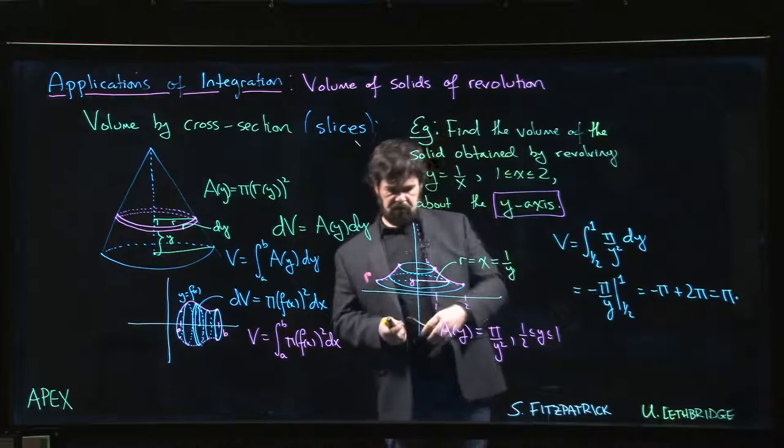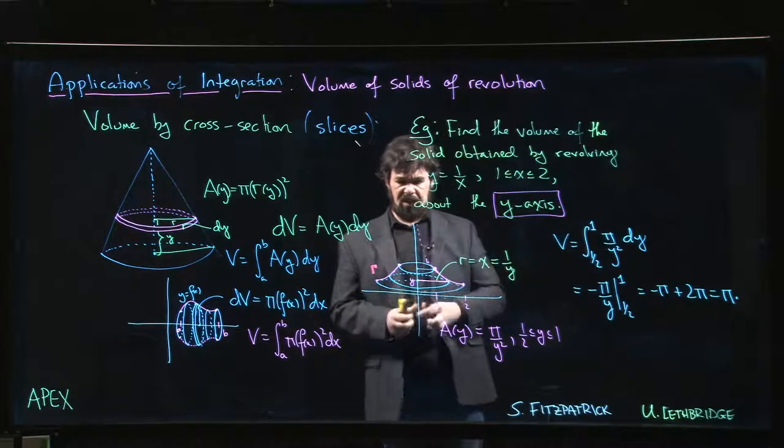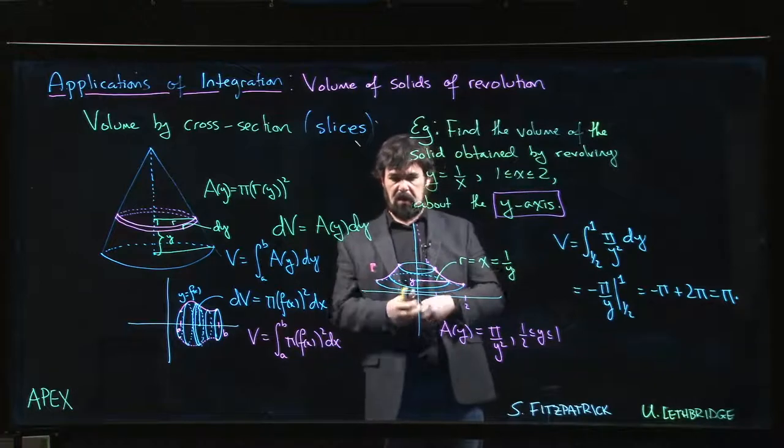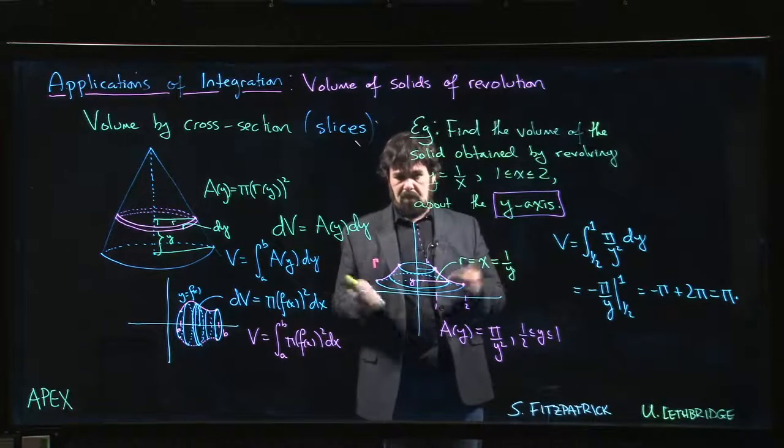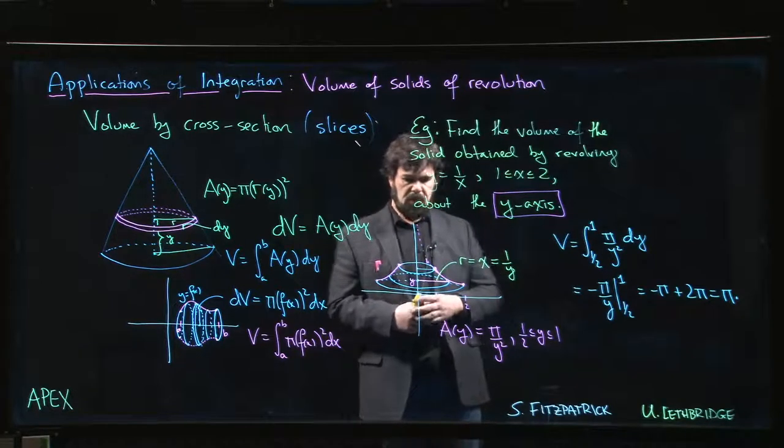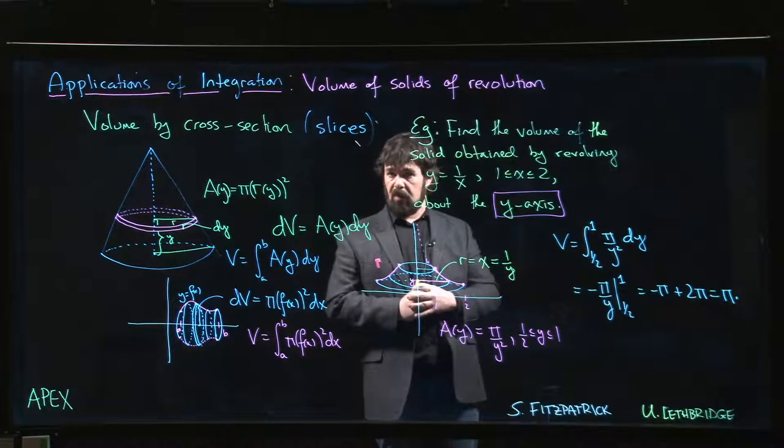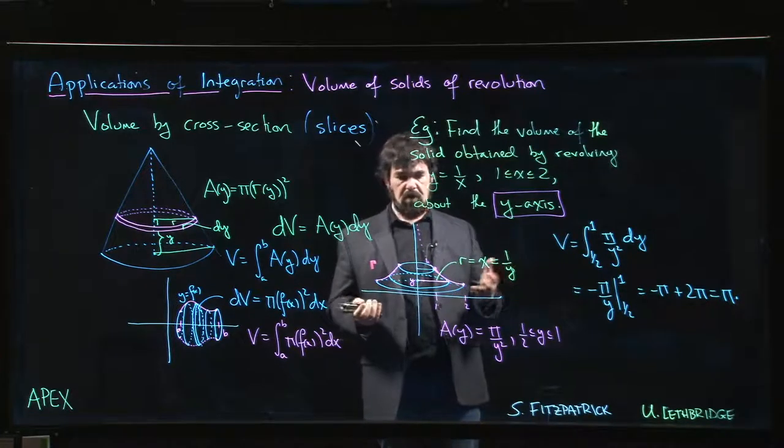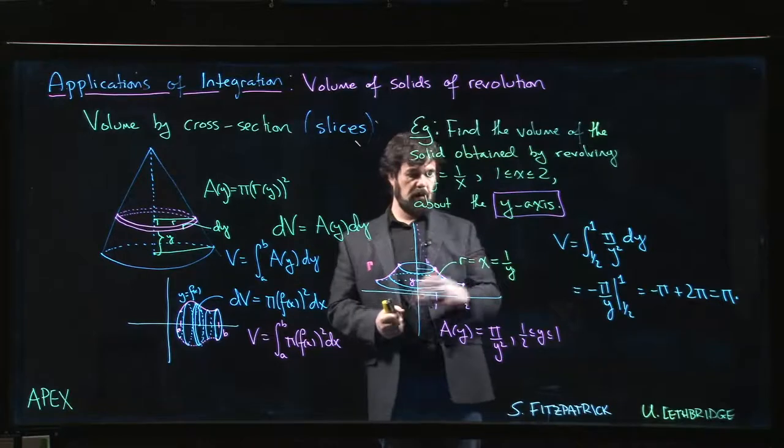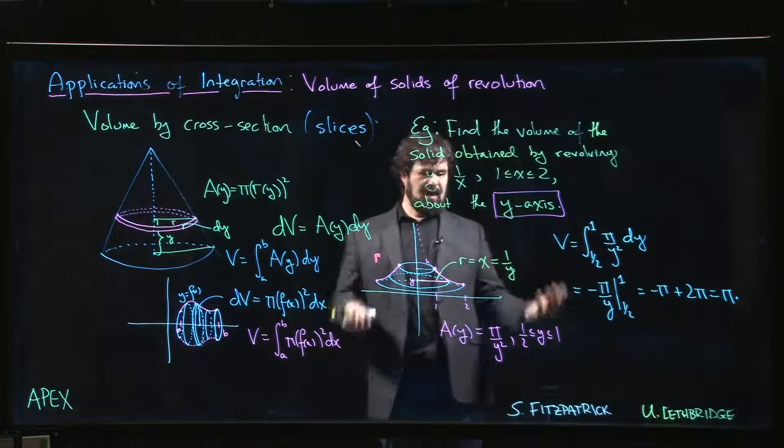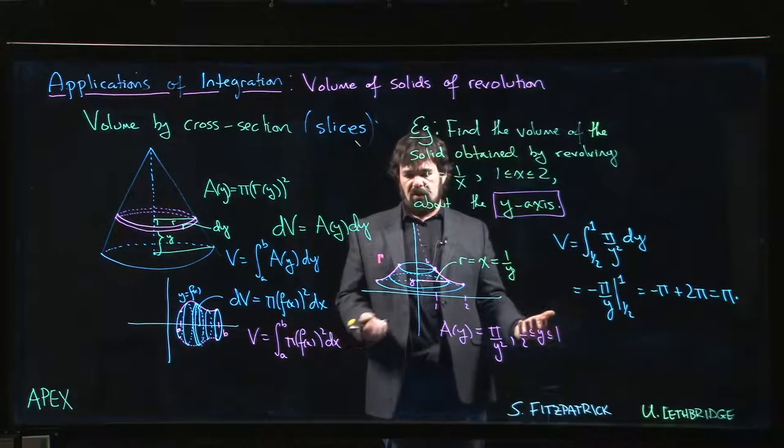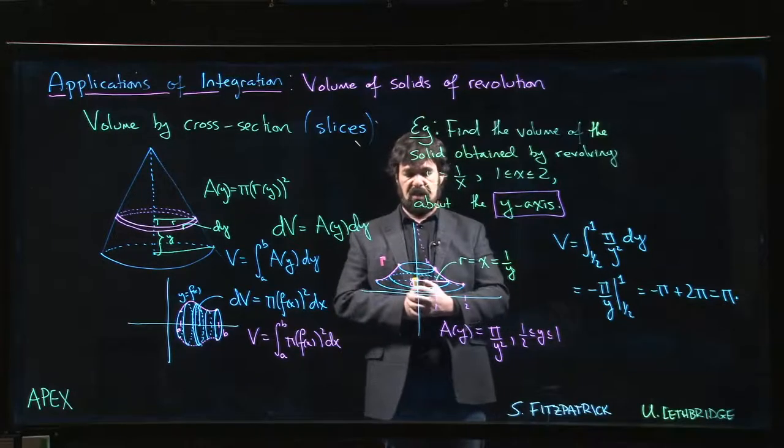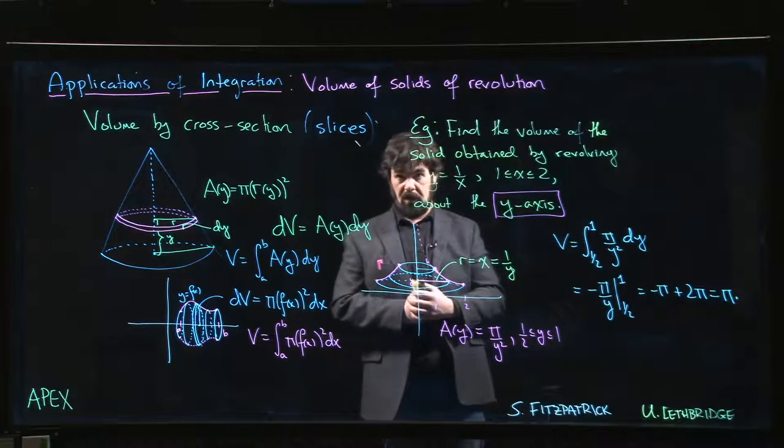We get twice the volume that we got going around the x-axis, but that sort of makes sense I think looking at the picture. This one is a little bit more stretched out, it's believable. So there's a couple volumes of revolution using this disk method—once around the x-axis, once around the y-axis. Same approach either way, you just got to be careful, make sure that you set things up properly, and a picture often helps with that.